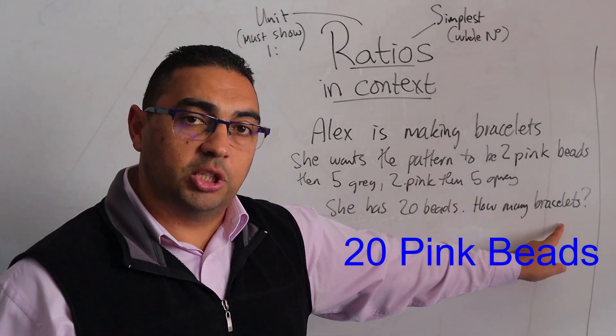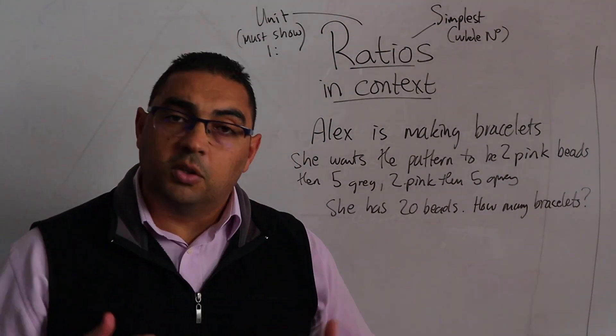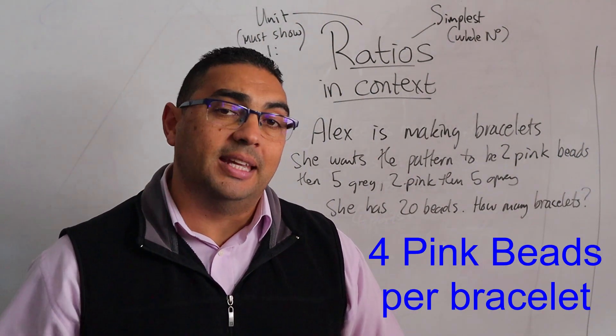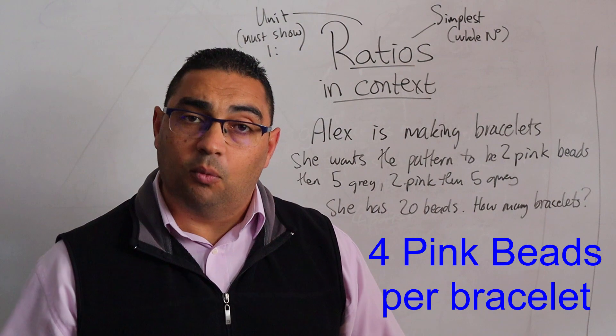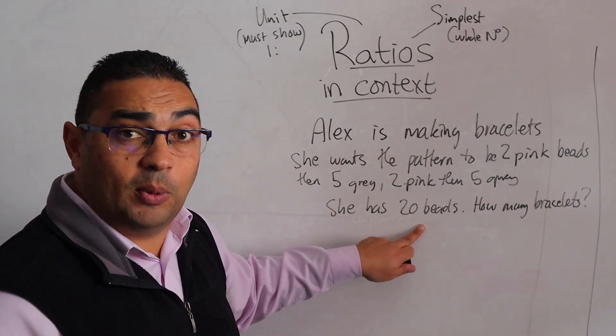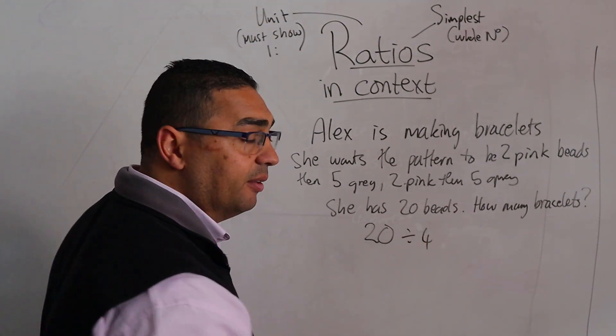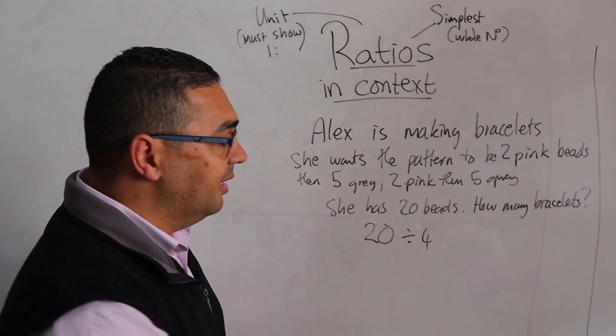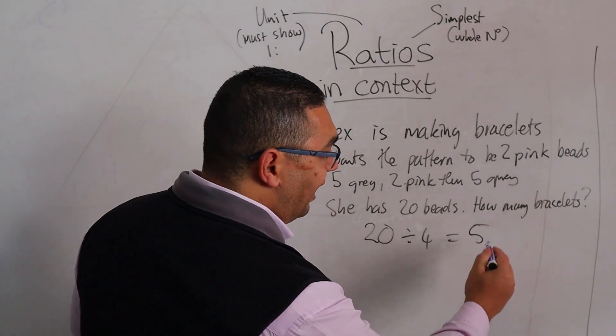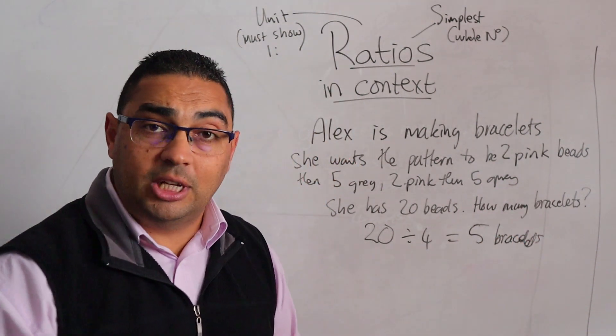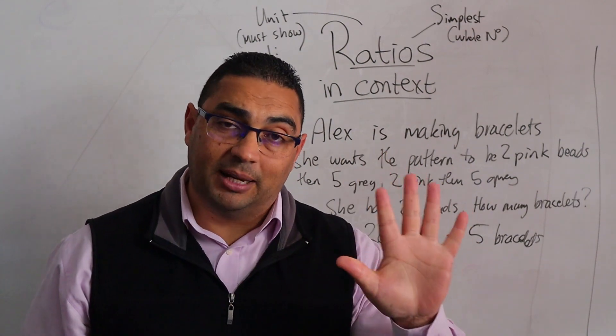So we want to know how many bracelets can she make if she's going to be using four beads per bracelet. Well, what we're going to be doing, since she only has 20 beads, is we're going to take 20 beads, divide it by the four per bracelet, and that's going to give us five. So we end up knowing that she can make five bracelets with the 20 beads that she has.